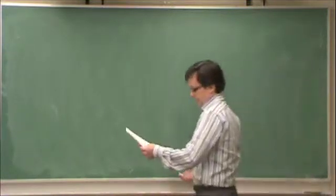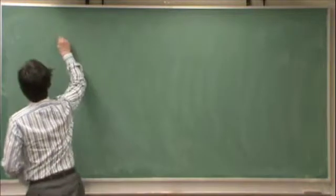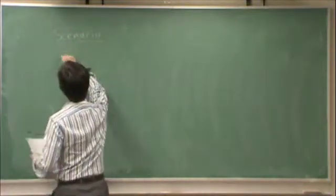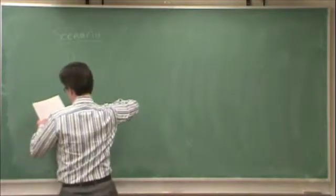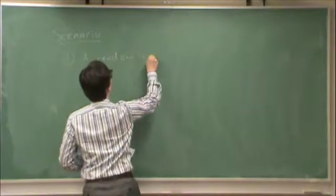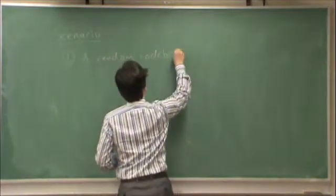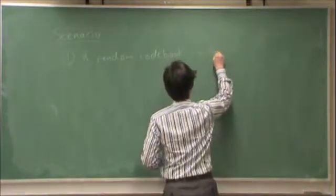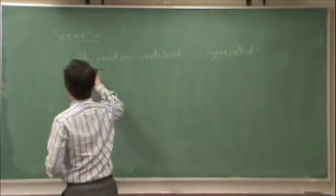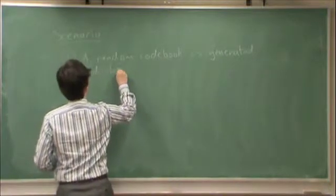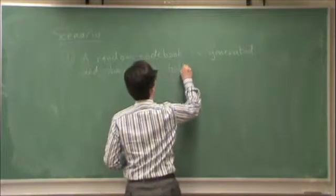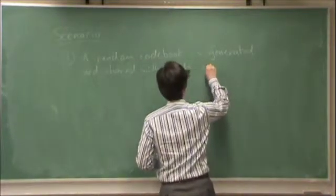So, here is the communication scenario. Okay, first, a random code book is generated and shared with both transmitter and receiver, or excuse me, encoder and decoder.